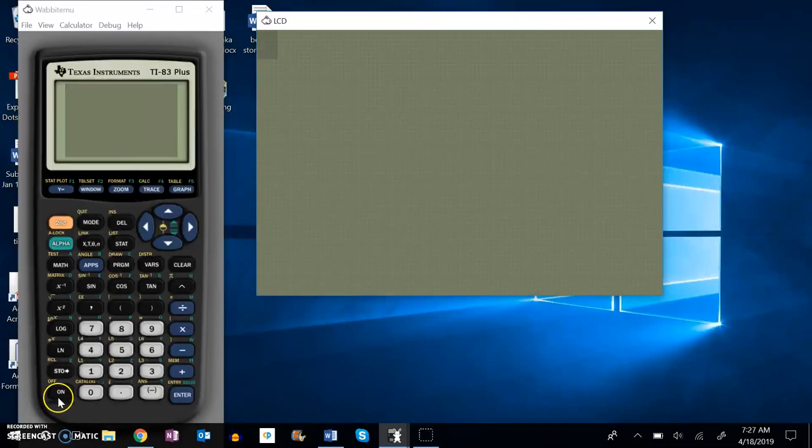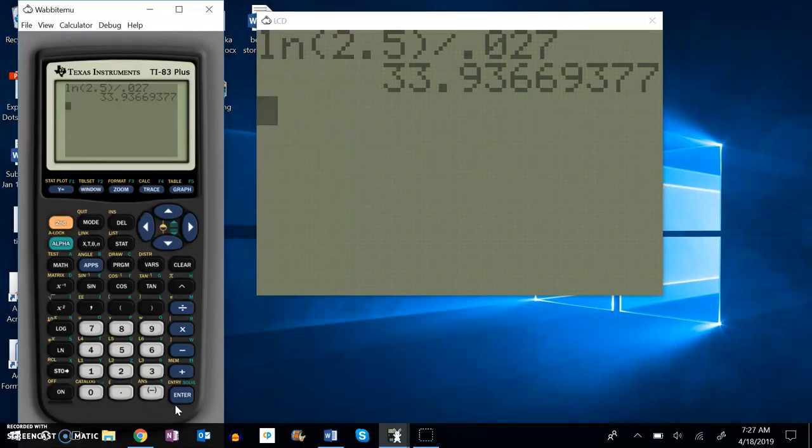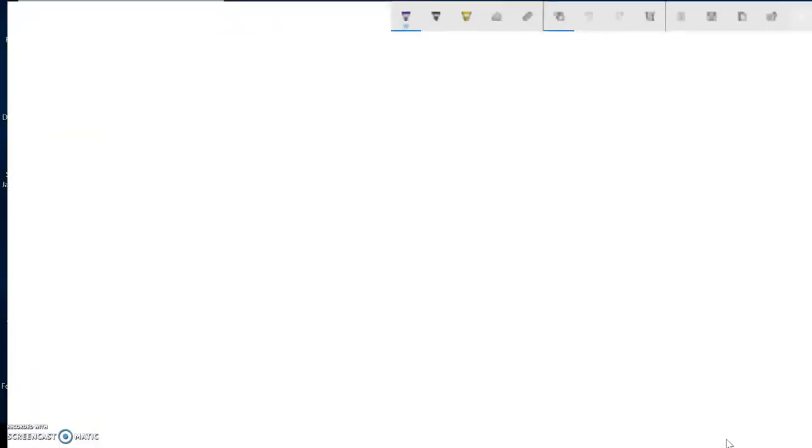I'm going to do this on the calculator. Natural log of 2.5, and notice I close off those parentheses, divided by 0.027. So about 34 years it looks like, 33.9. So I think that I can say...